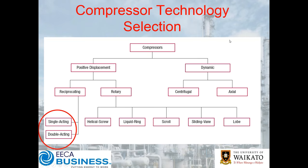Just very briefly, we're going to talk about the different technology available. Everyone's familiar with reciprocating compressors. Probably your most common compressor is the helical screw, and then you've got your centrifugal compressor. There are a number of other compressors in terms of variations on rotary positive displacement — liquid ring, scroll, vane, lobe compressors and the like. Generally you don't see too many axial compressors unless they're in a very specific dedicated use.